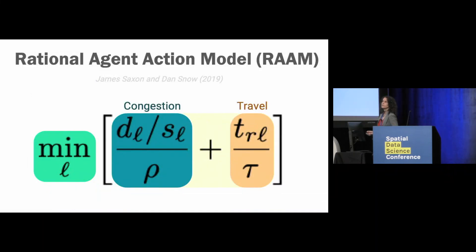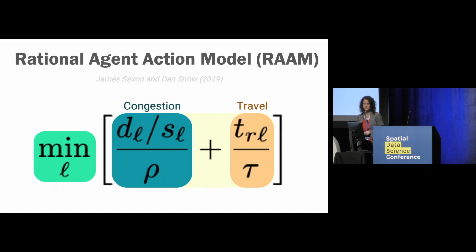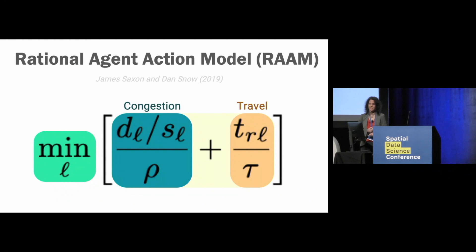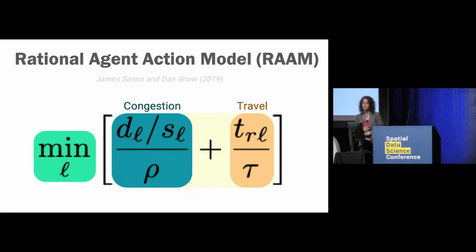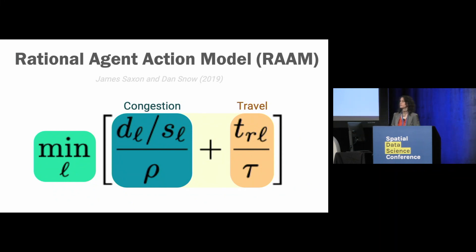The first component is travel times, like with the distance buffer model. More importantly, there's also a component of congestion or service saturation. The congestion term is basically the ratio of demand over supply, standardized by an area mean. For example, with dentists in Chicago, you'd take population or patients divided by dentists, normalized by the average ratio for Chicago. Travel times indicate how long it takes to get to the amenity, standardized by the maximum time you're willing to travel. A greedy optimization algorithm then loops over the points of origin and assigns the access score to each location.